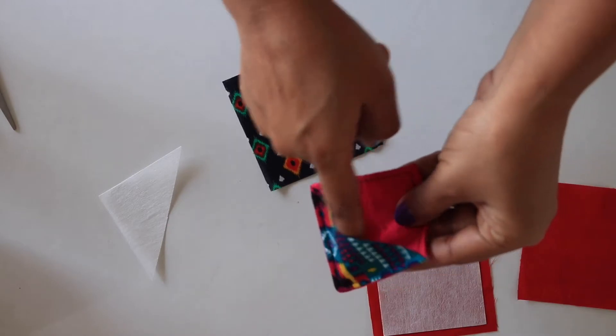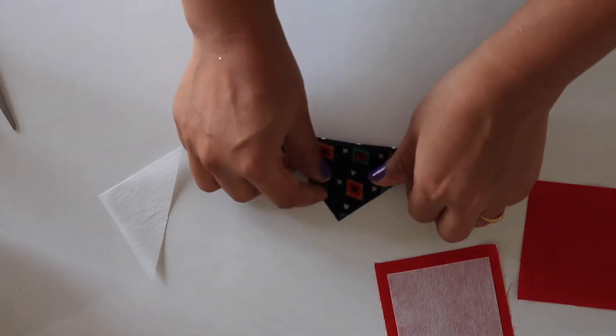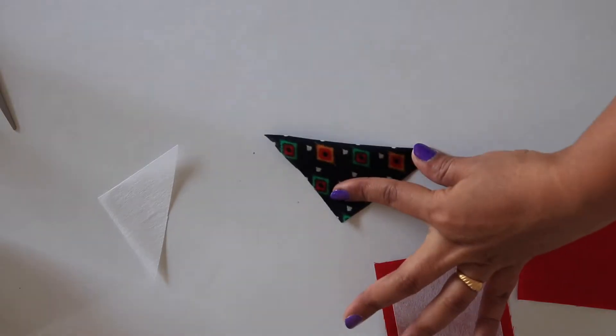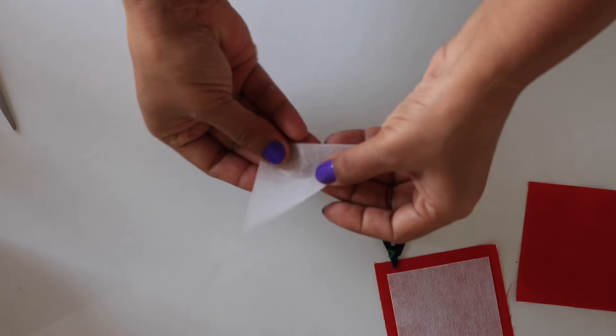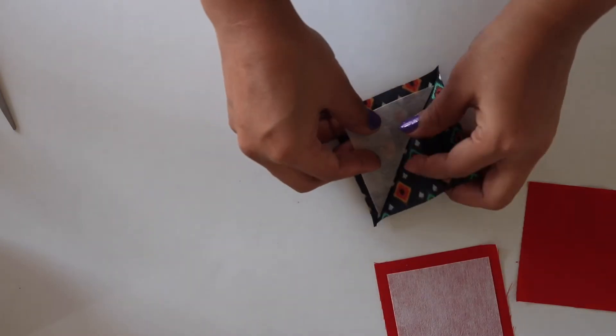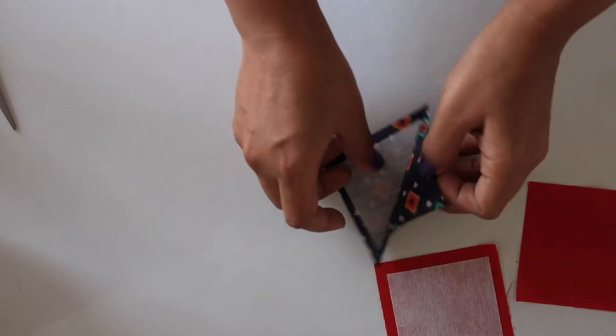Then take the fabric that you want to hang over the pages of the book. Fold it in half diagonally with wrong sides together. Now slide the triangle interfacing in this fold. Center it properly and iron it.